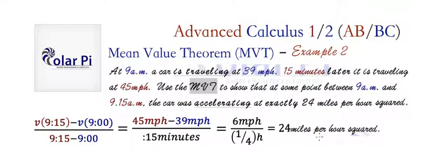This 24 miles per hour, which is the average velocity between 9 and 9:15, has to equal f prime of c, which in this case would be v prime of c, and so the acceleration. For some point c, which in this case would be sometimes c between 9 and 9:15 as desired, or as required, rather.